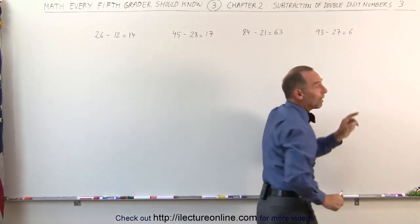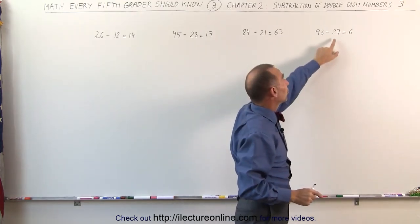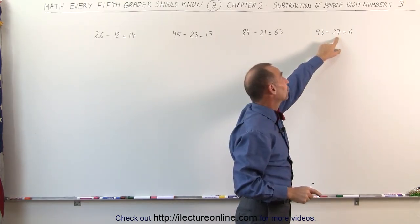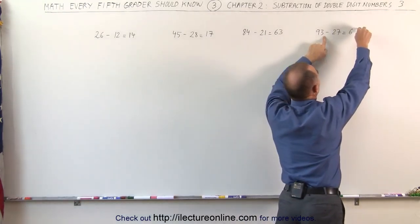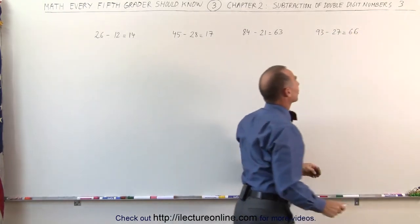But wait a minute. I subtracted 3 more than I should because 30 is 3 bigger than 27. I add 3 more to that and I get a 6. And the answer is 66.